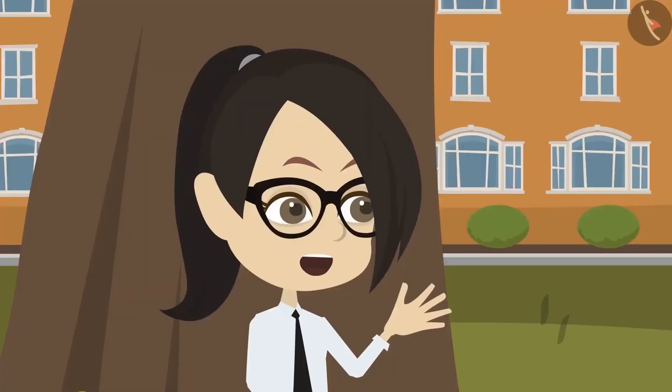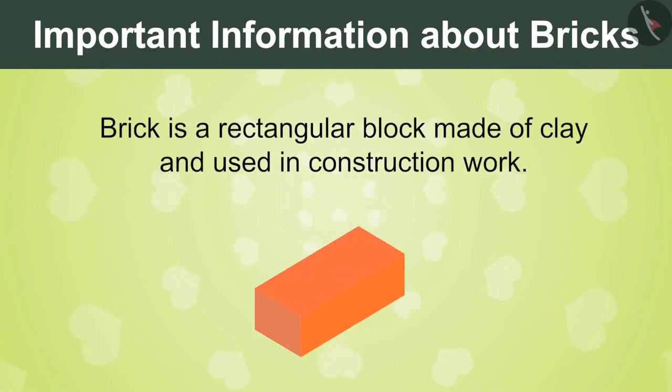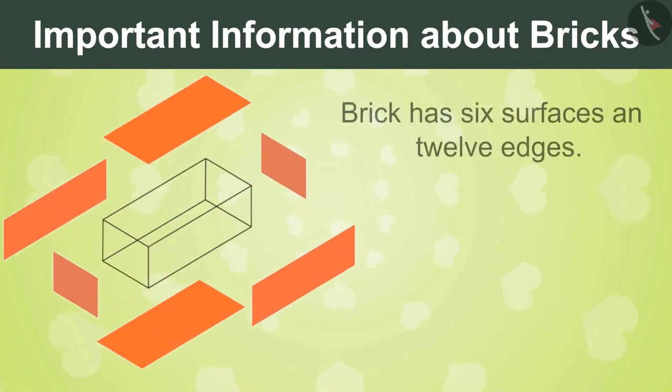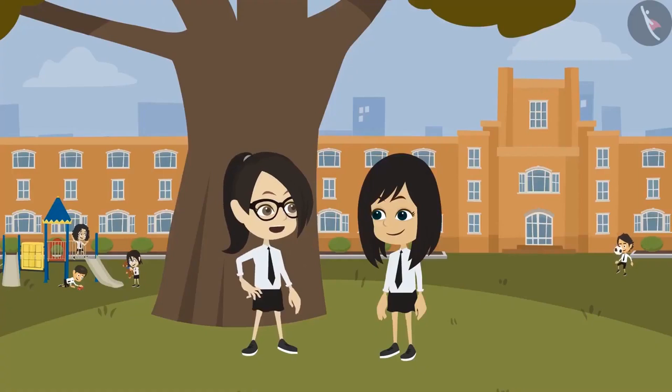Neha, I know all information about bricks now. Brick is made by baking clay. They are used for construction work. Brick is in the shape of a cuboid. Brick has 6 surfaces and 12 edges. And all the edges and surfaces of the brick are straight. But I think Neha, the real fun would be to make something with them.